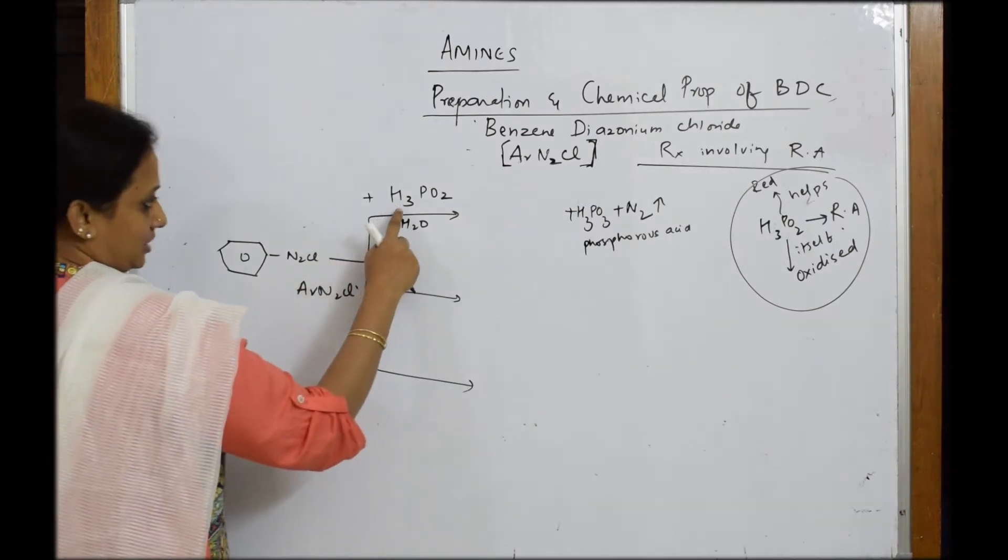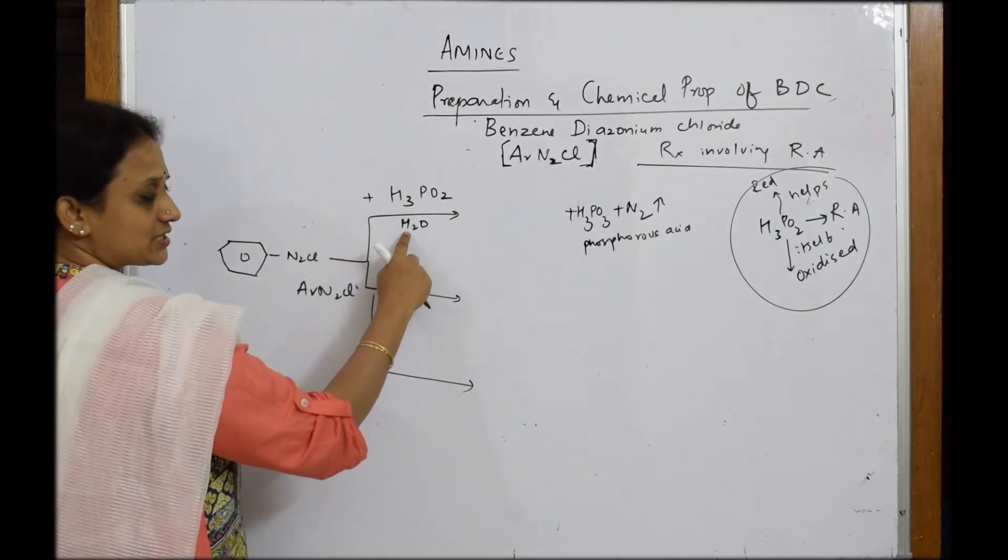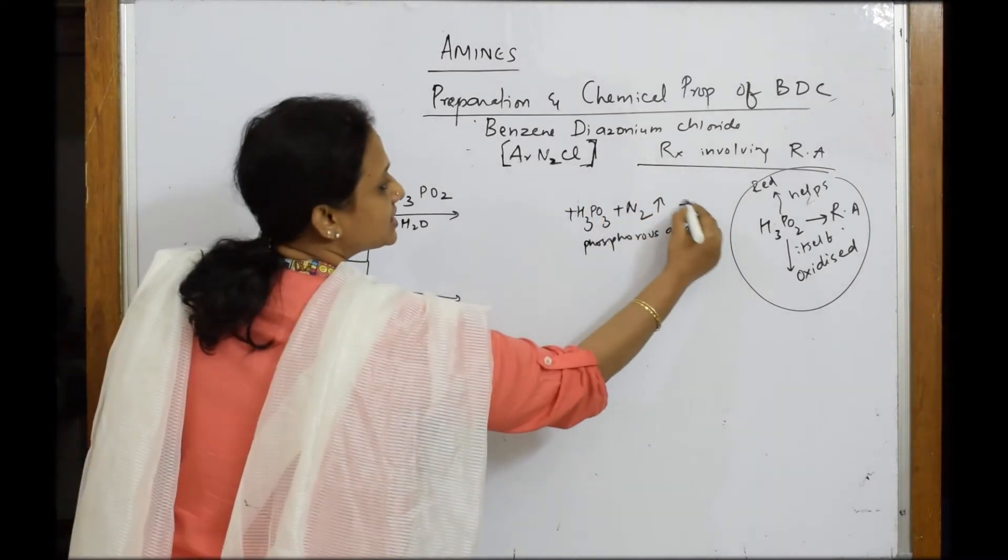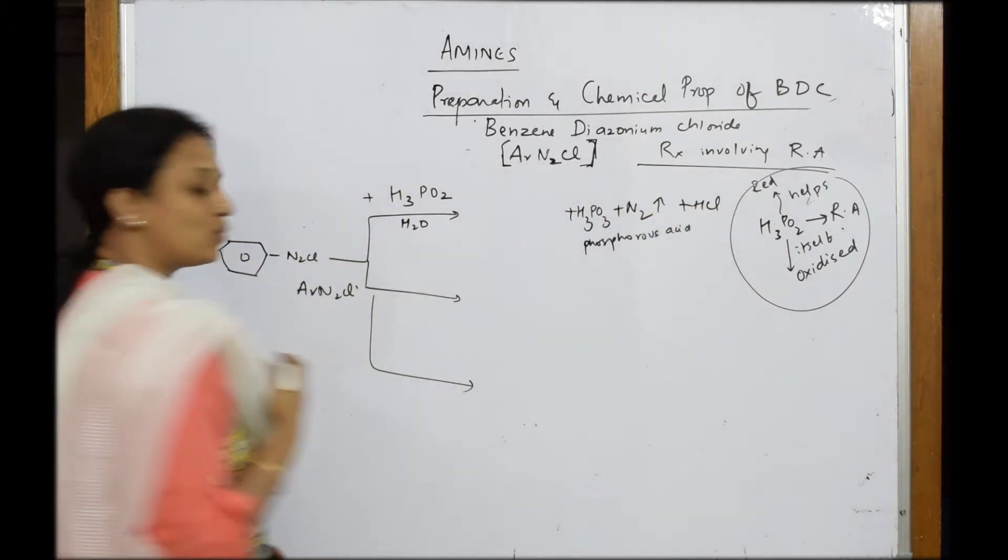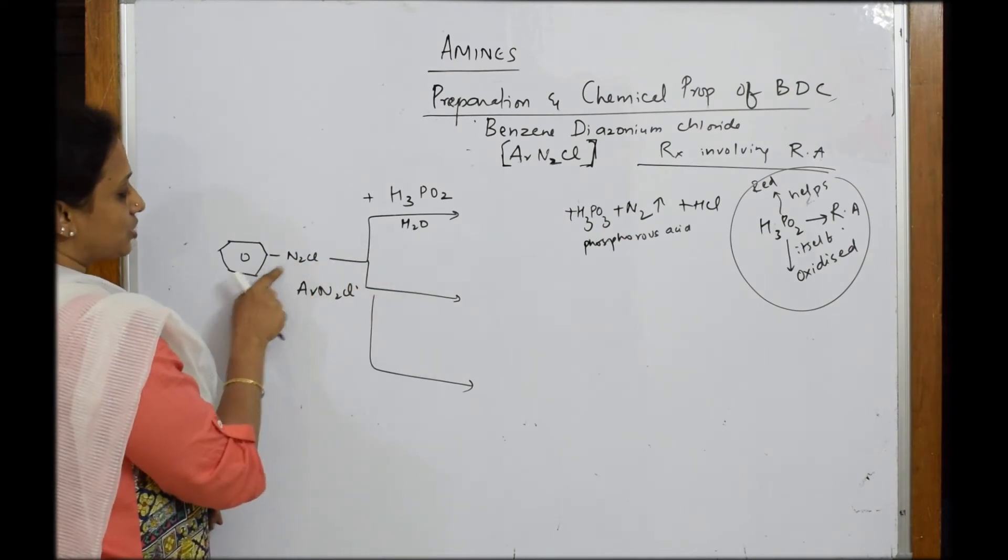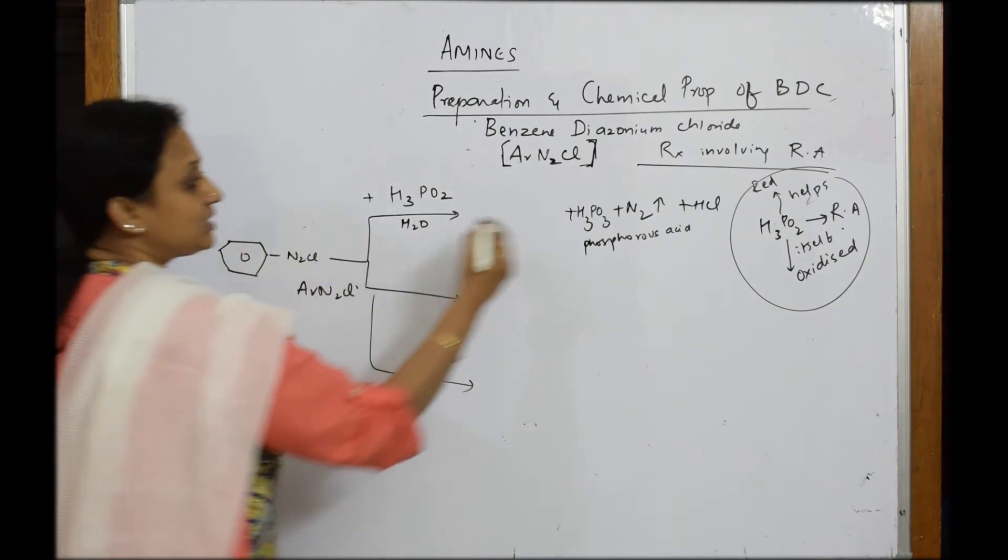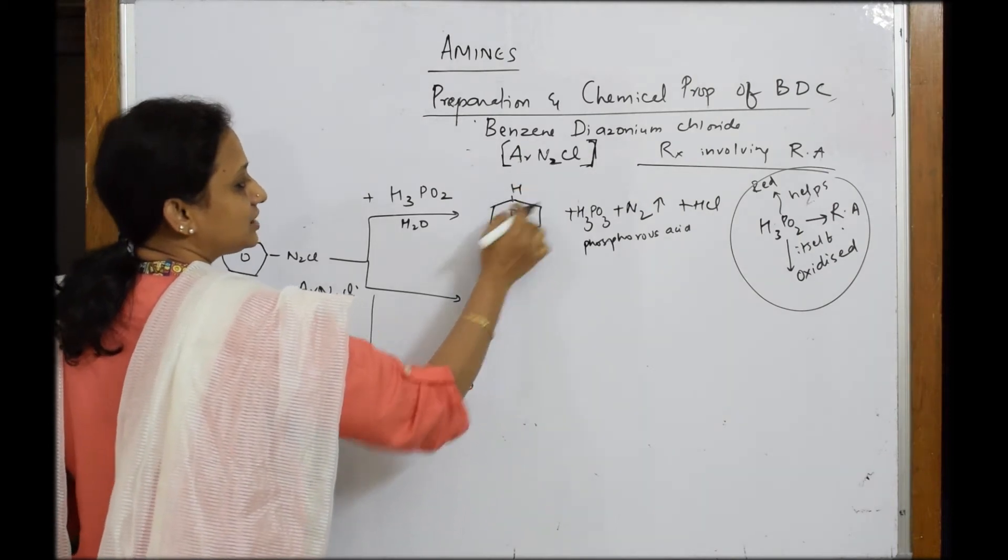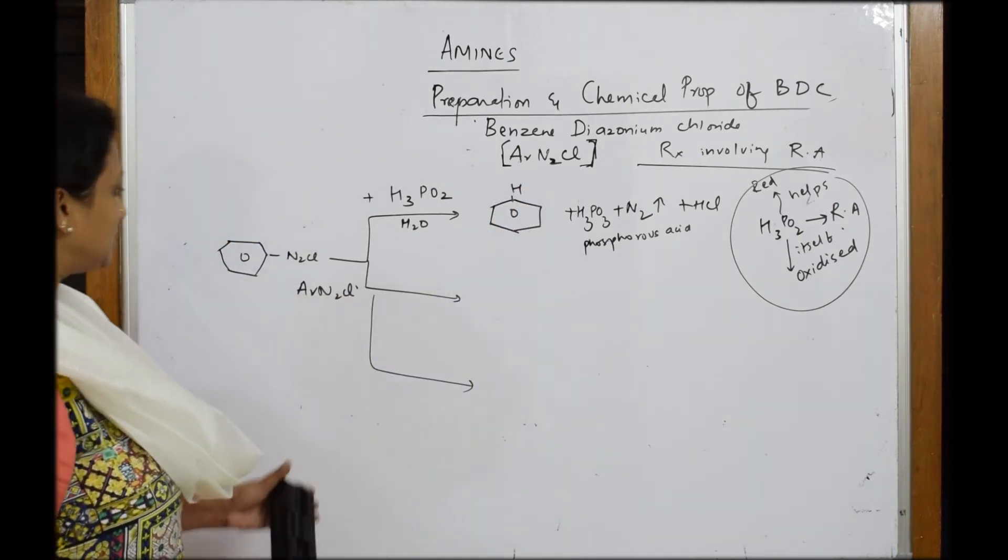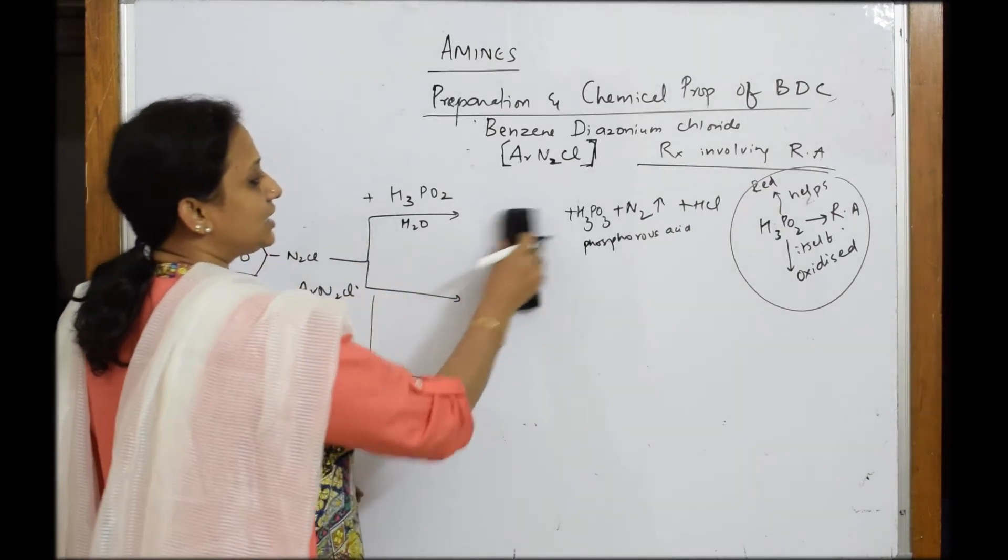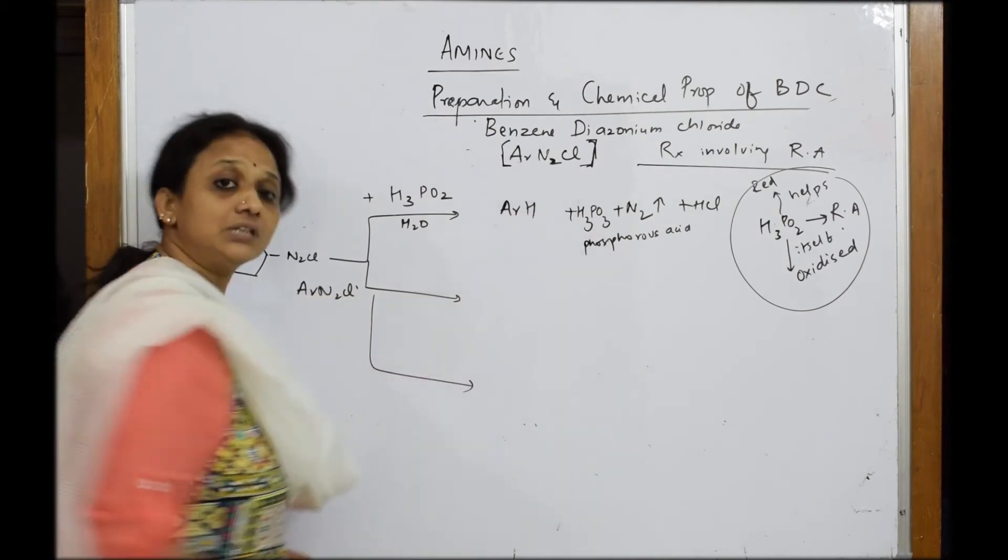You still have Cl. One H from here takes out this Cl and HCl comes out. Now what is left out? This is lost. Cl is lost from here and this bond shifts into your benzene ring forming your arine. That is your H, arine. So BDC to arine. So if you're not writing like this you can write directly ArH. Done.